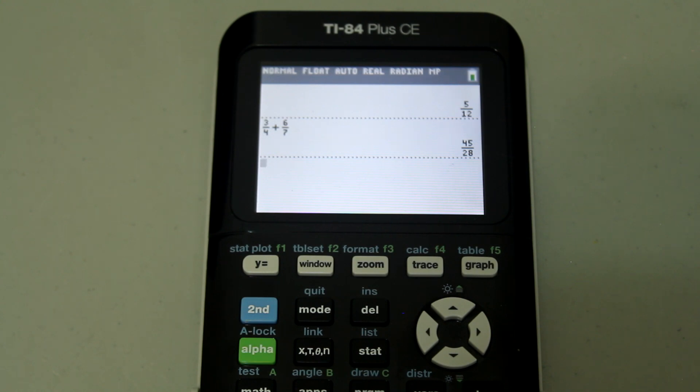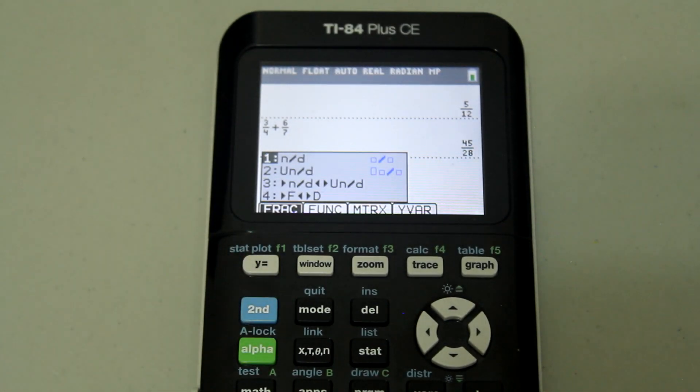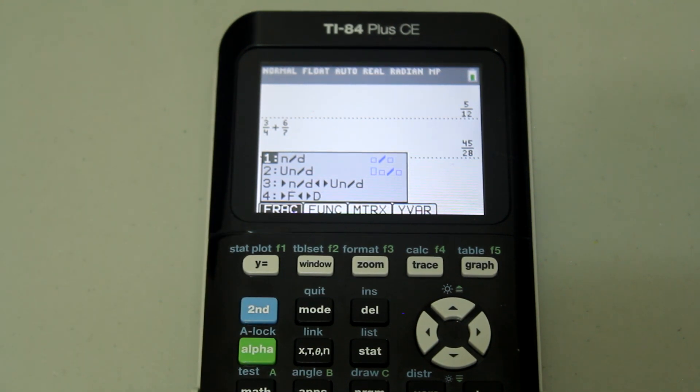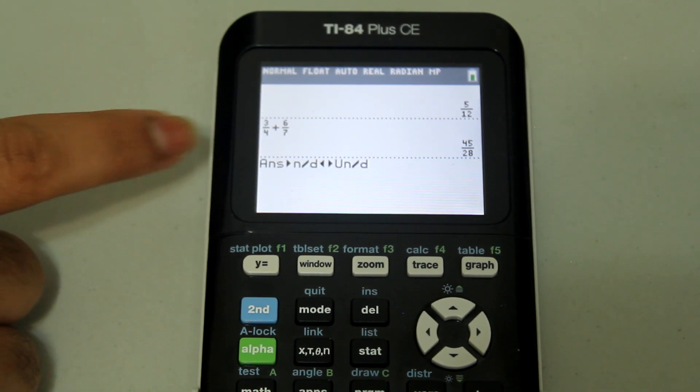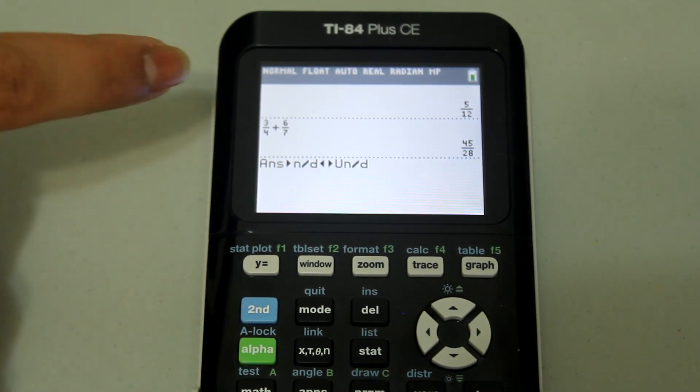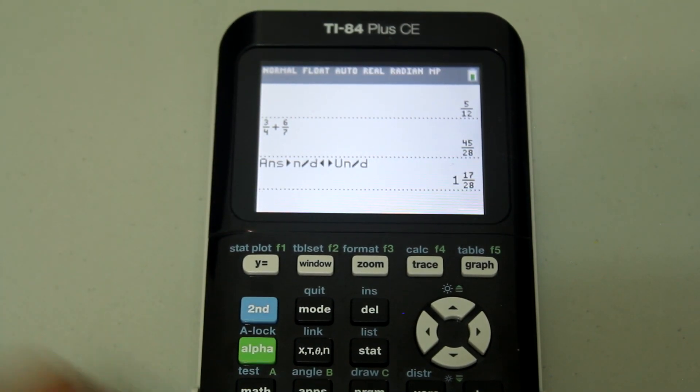Notice that the answer is an improper fraction, 45 over 28. If you wanted this as a mixed number, you can go into alpha y equals and go into the menu and hit select the third option. Just hit number three and you see that this pops up answer and then n over d and then two arrows in opposite directions and then u n over d. Just hit enter and you see that the improper fraction is converted to a mixed number.